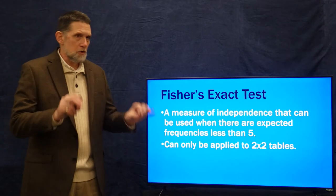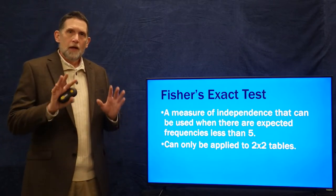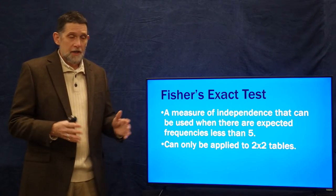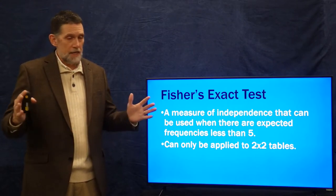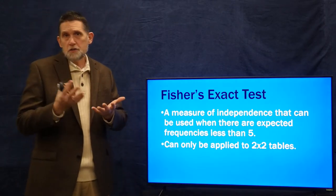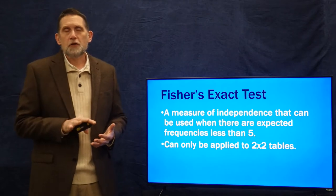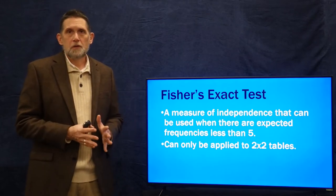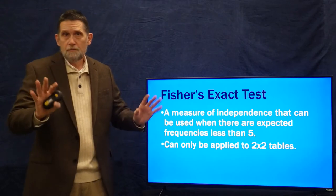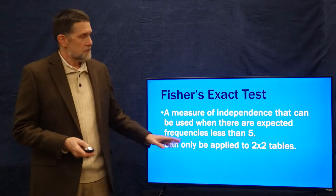Fisher's Exact Test works on two by two tables only, so it is limited in that way. Another way to deal with small expected frequencies is collapsing categories. If you have expected frequencies less than five in a chi-square, you can collapse categories — maybe down to a binary variable, a two by two table — and you'll increase the expected frequencies that way. So if you have a three by three or four by four table with some expected frequencies less than five, collapse it to a two by two and you may end up with expected frequencies greater than five, making Fisher's Exact Test unnecessary. But if you still have expected frequencies less than five, you can use Fisher's Exact Test to deal with that case.